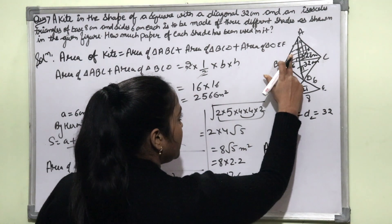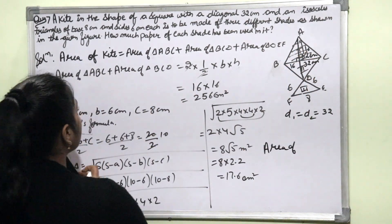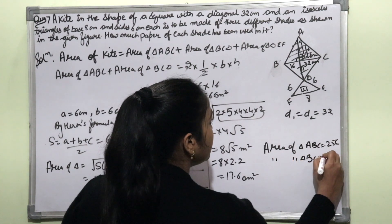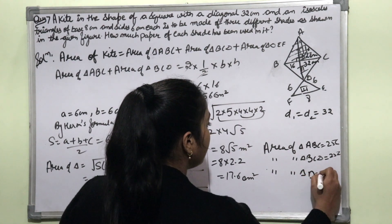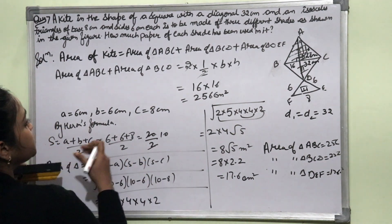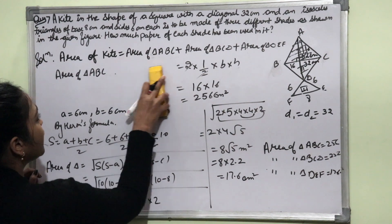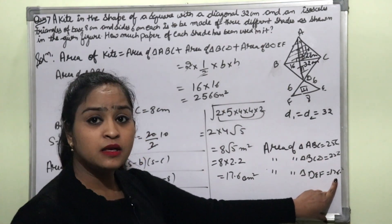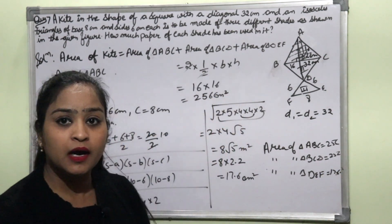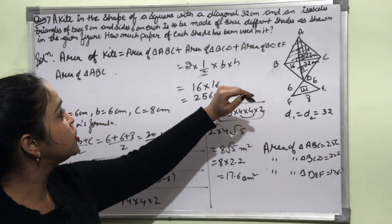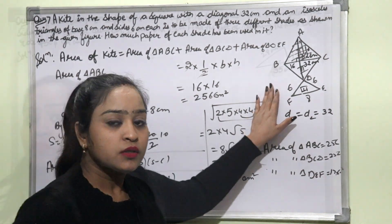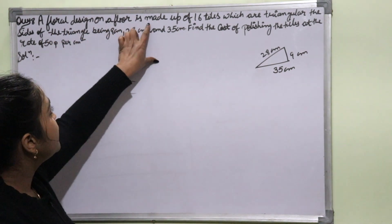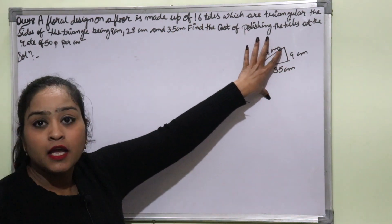The three separate areas are: Area of triangle ABC = 256 cm², area of triangle BCD = 256 cm², and area of triangle DEF = 17.6 cm². These are the individual answers for each shade of the kite.